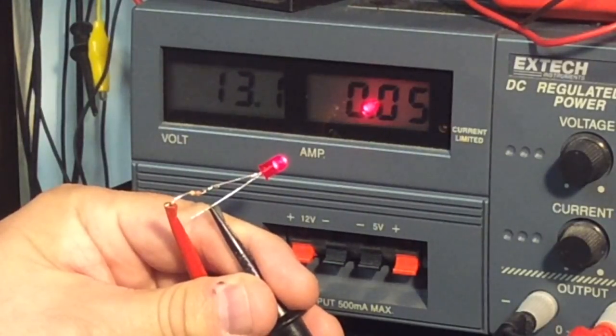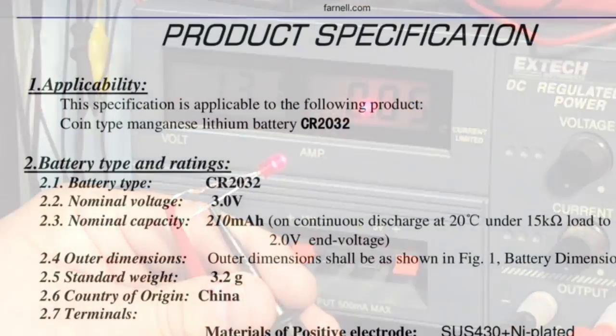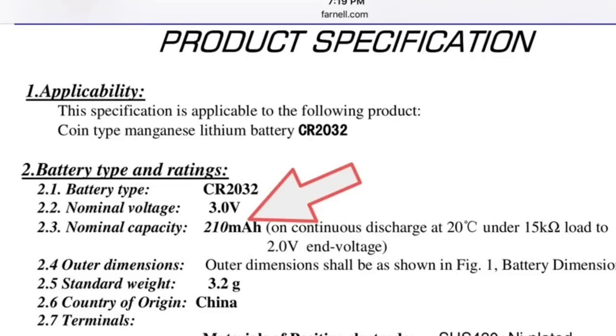So why does this work with just a three volt 2032 battery? It's because the battery doesn't put out enough power. It's maximum 210 milliamp hour rating, but at three volts with the load and the internal resistance, it doesn't produce enough current to burn out the LED.